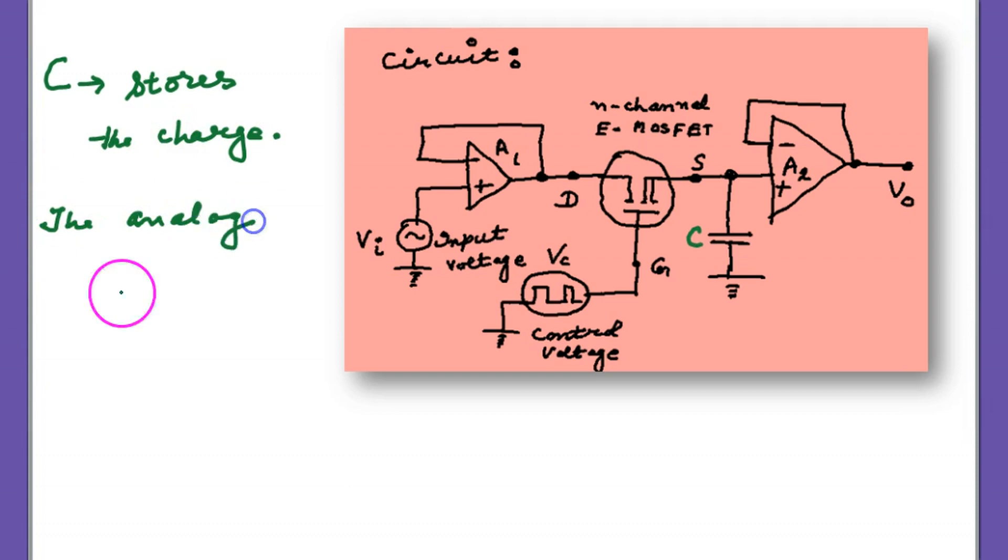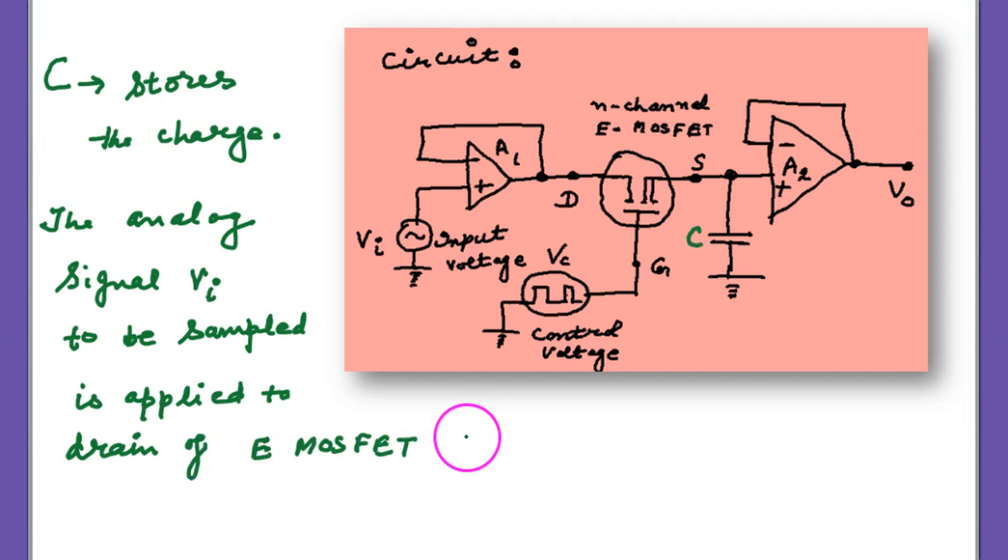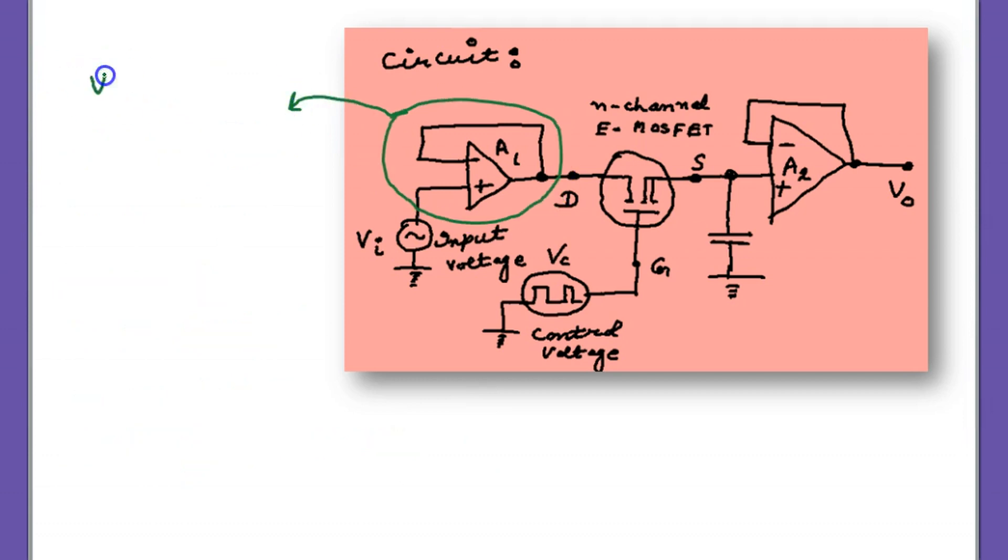The capacitor stores the charge. And analog voltage VA, which is to be sampled, is applied to the non-inverting terminal of A1. Then that voltage goes to the drain because the first op acts as a voltage follower. That voltage goes to the drain, the input voltage.